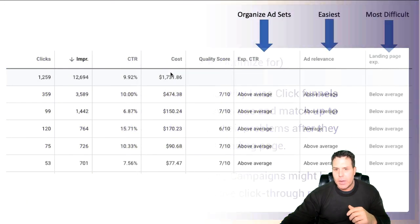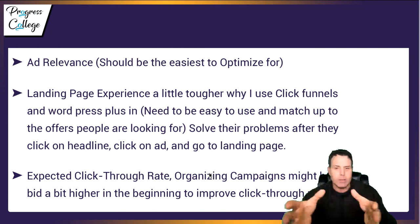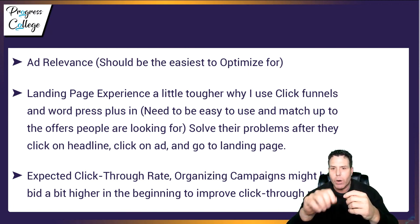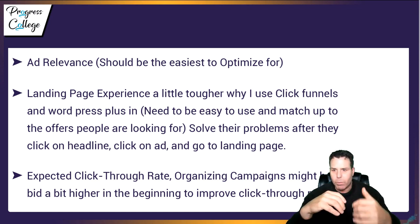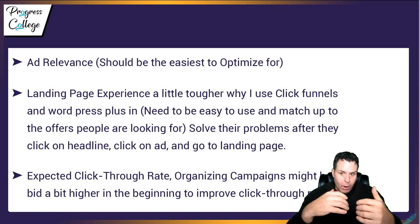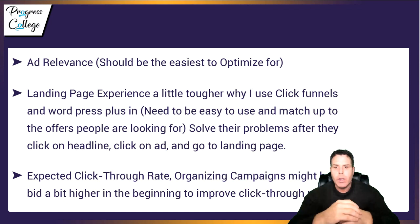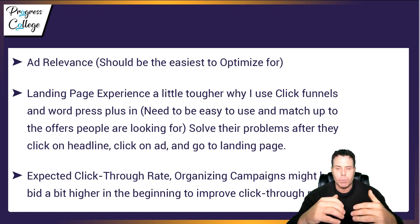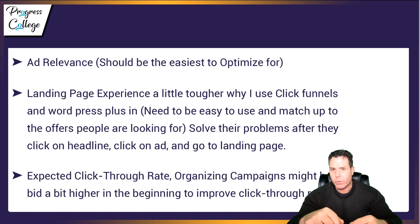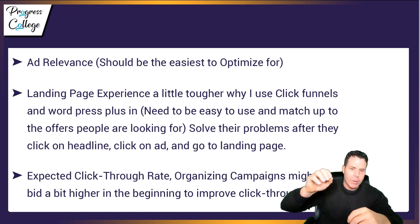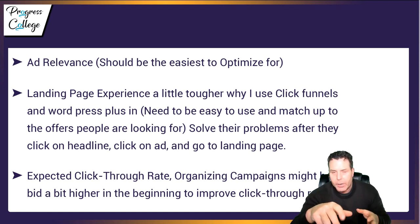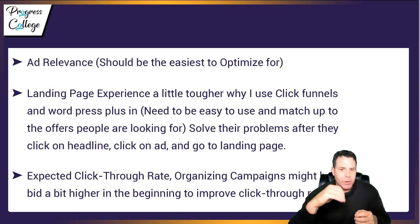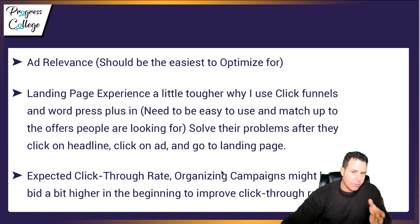To recap: ad relevance should be the easiest to optimize for. Landing page is a little tougher — whether you're using ClickFunnels or WordPress, you need to match people's problems with offers, solve their problems, get them to click the ad, and then deliver on the landing page. For CTR, organizing campaigns well is key, and you might have to bid a bit higher in the beginning to improve click-through rate. You can play around with enhanced bid strategies and set a higher bid based on what Google Keyword Planner tells you is the recommended range when you're first getting your ads going.